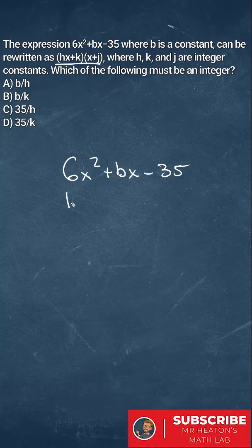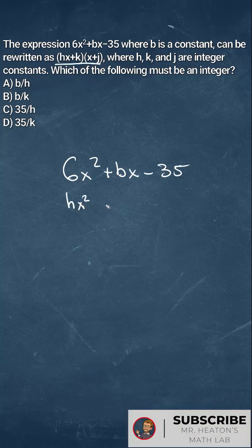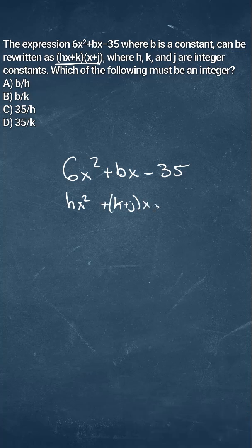We need to expand this out and what we're going to find is we'll have hx² + (k+j)x - kj, with h being 6, b being k plus j, and 35 being kj.